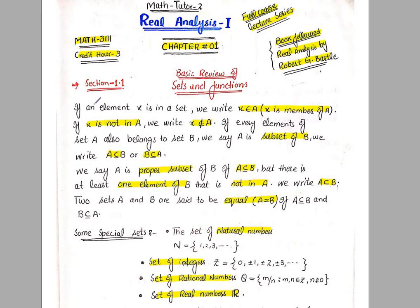If an element X is in a set, we write X belongs to A. If any element is present in a set, we write it as X belongs to A, or X is a member of A — meaning X is a member or element of that set.